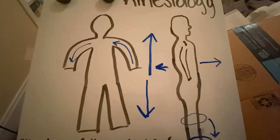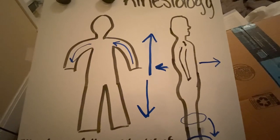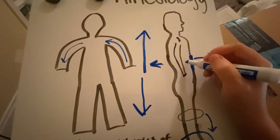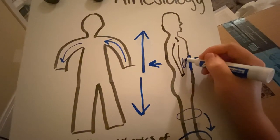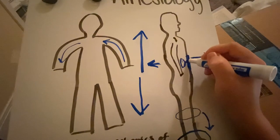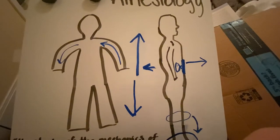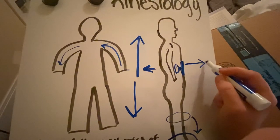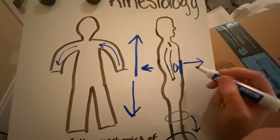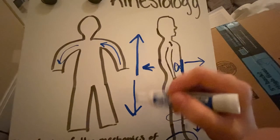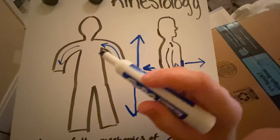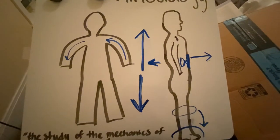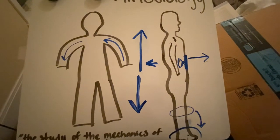Another directional set would be superficial versus deep. Superficial is whenever you come closer to the surface of the body, and deep would be further into the body — so your stomach would be deep to your skin. All of these come in pairs: anterior versus posterior, superior with inferior, proximal with distal, and superficial with deep. You can always describe things in two different ways.